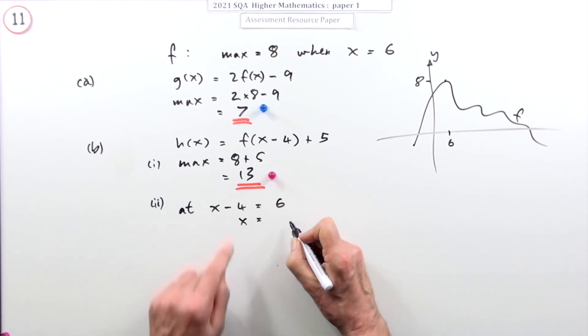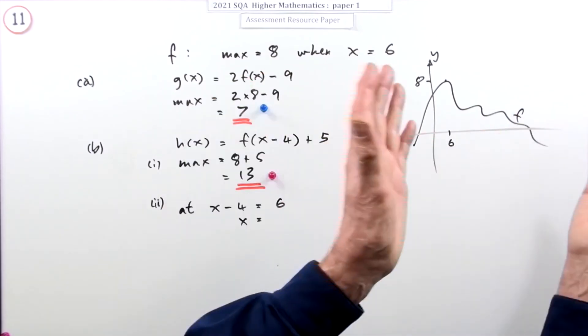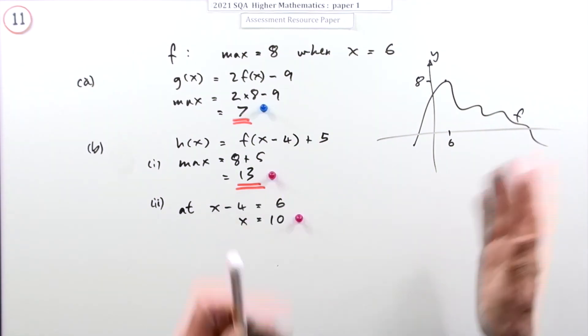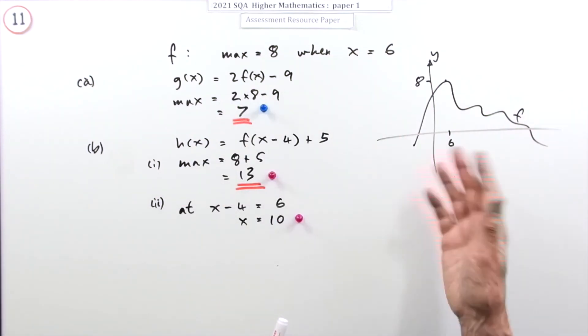Which means it's going to happen at x equals ten, that's your shift forward four. But you probably don't think of that, you just think it's been shifted forward four, so it's going to go from six to ten.